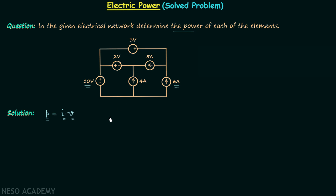It is our task to calculate all the missing parameters and then easily calculate the power using P = IV. To determine whether the element is absorbing or delivering power, we use the rule from the previous lecture: if current enters the positive terminal, power is absorbed; if current leaves the positive terminal, power is delivered.